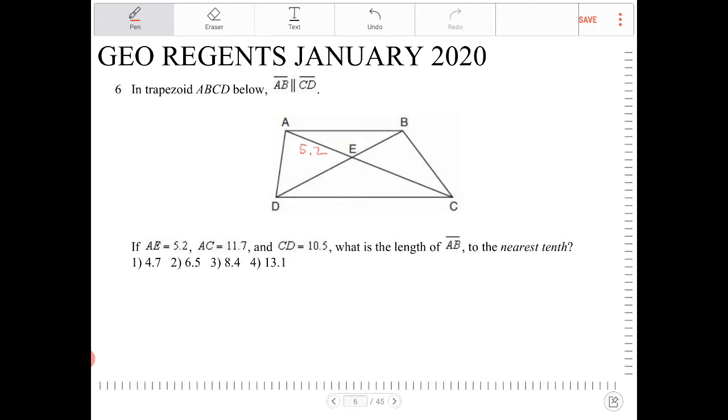AC is 11.7, so that would be this entire length. So 11.7 minus 5.2 is 6.5, then that means, right? So EC is 6.5. CD is 10.5. What is the length of AB to the nearest tenth?